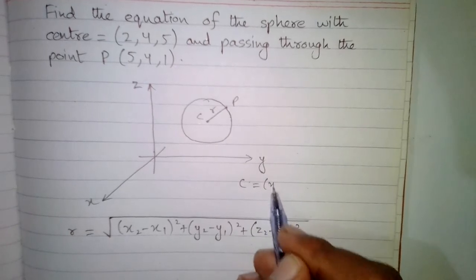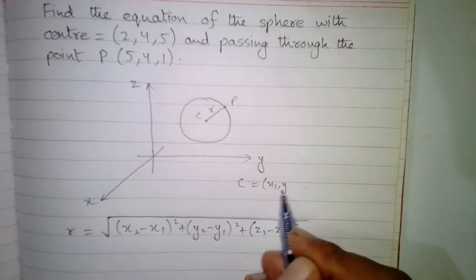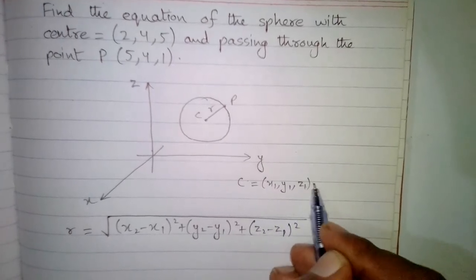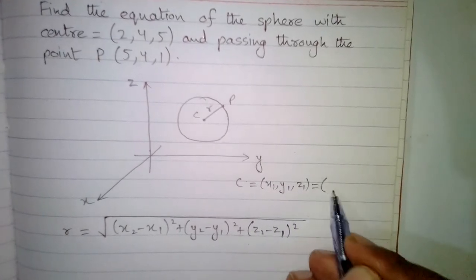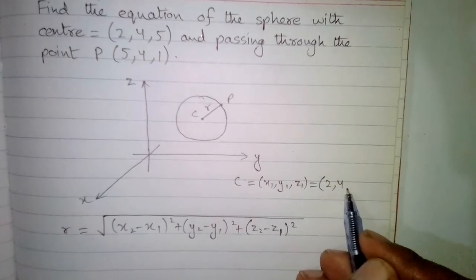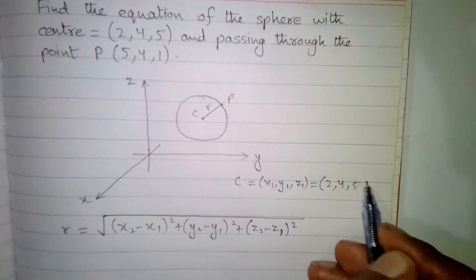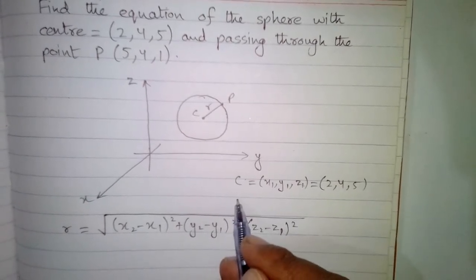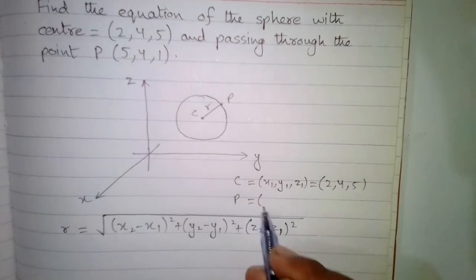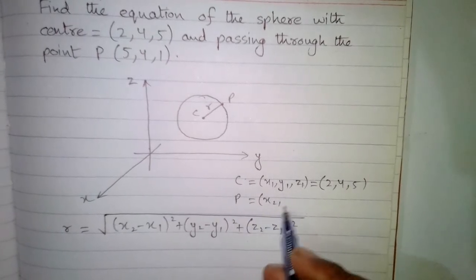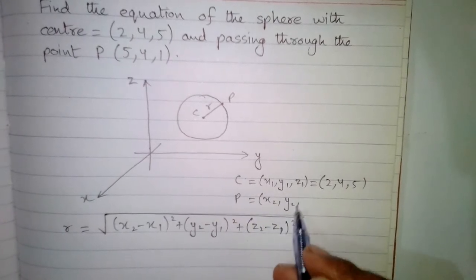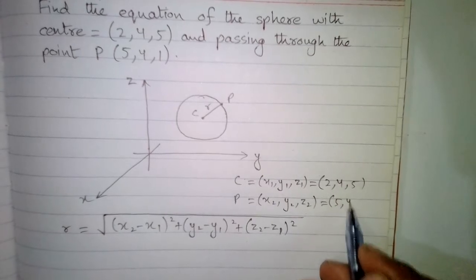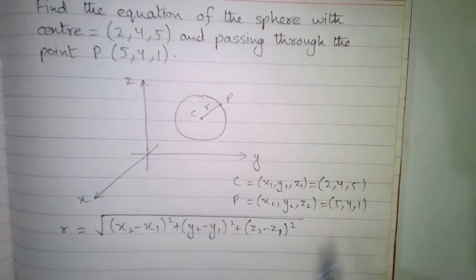We can suppose that the center C is (x1, y1, z1) which is equal to 2, 4, and 5, and the point P is (x2, y2, z2) which is equal to 5, 4, and 1.